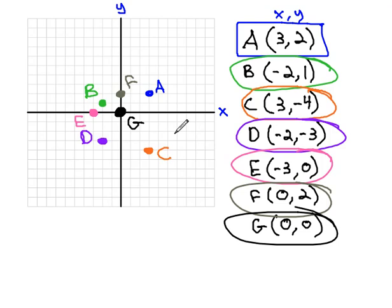The first number is how far left and right we move. Positive to the right, negative to the left, and the second number is how far up and down we move. Positive up, negative down.